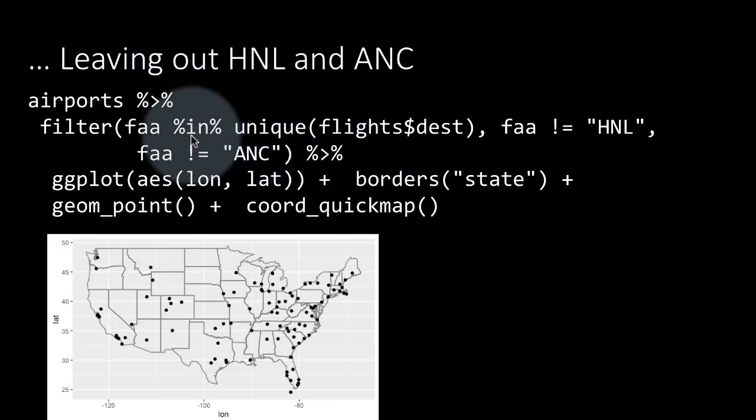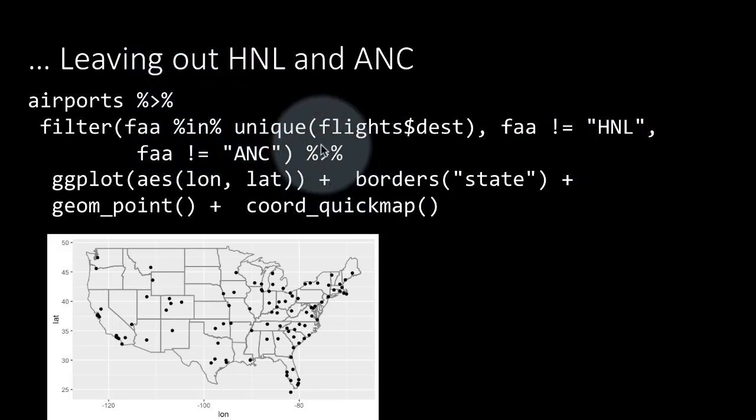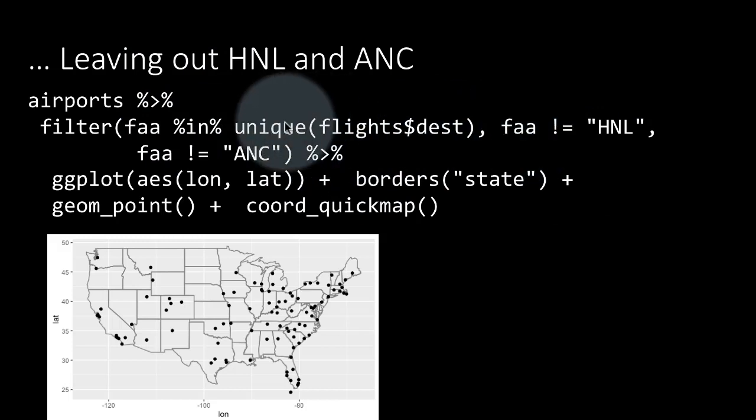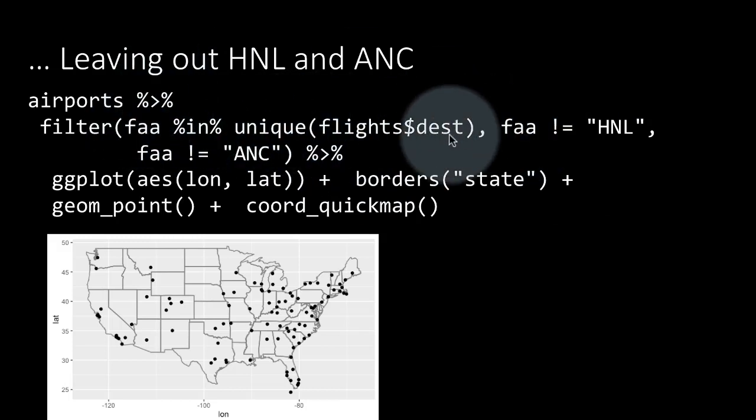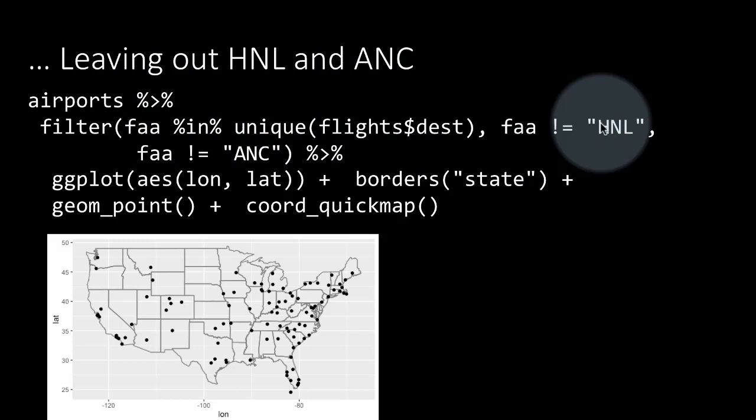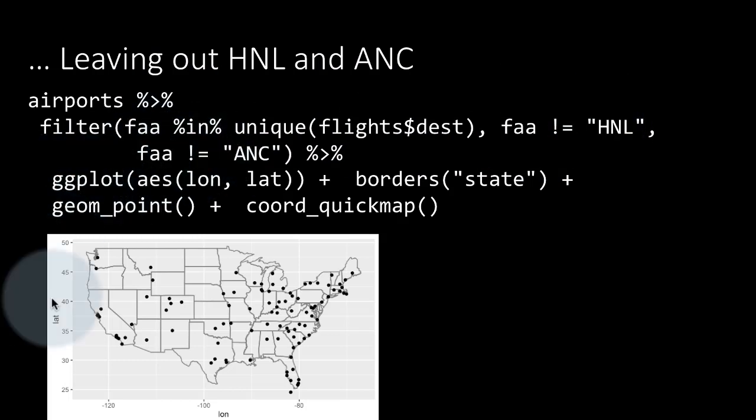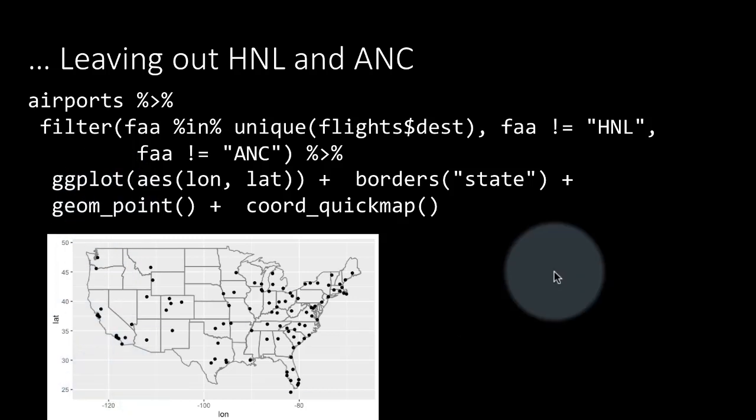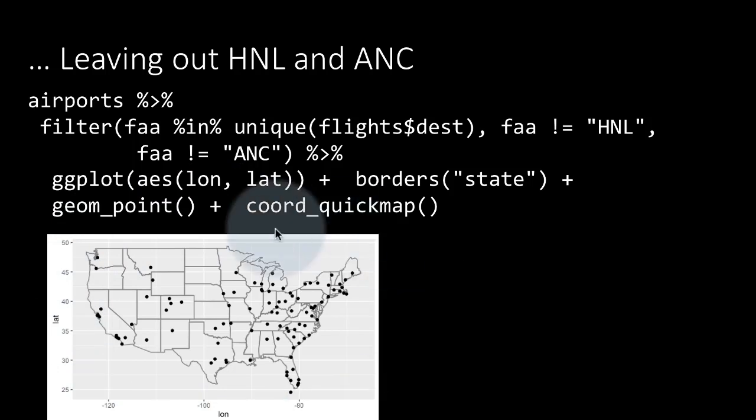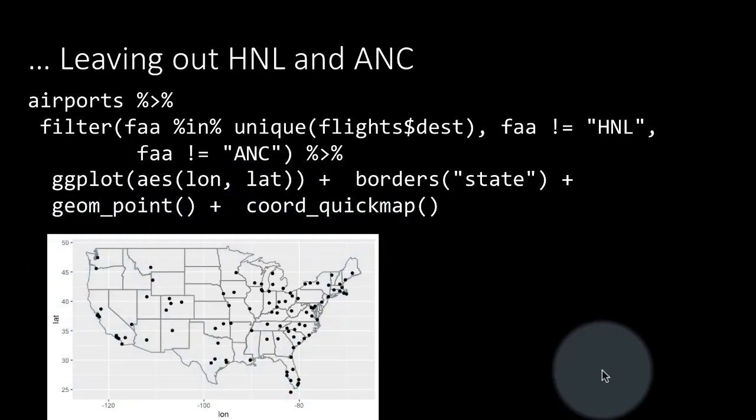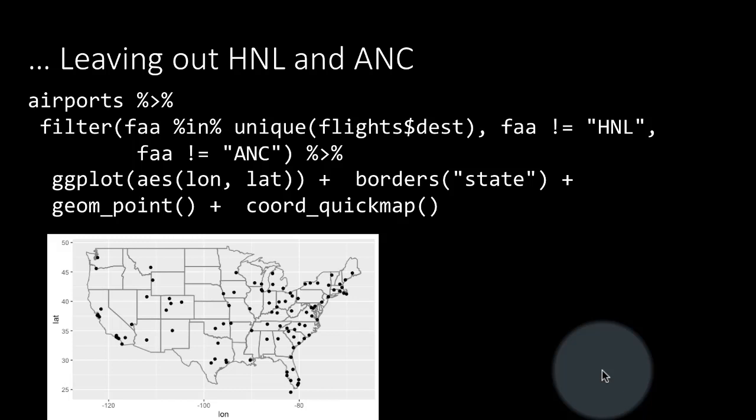You retain only those rows which satisfy all these three conditions. That is, the airport code belongs to the destinations and it's not equal to Honolulu, not equals Anchorage. So then we leave out the airport codes for those two distant things, Anchorage and Honolulu. And then we plot it and we get only the airports in the mainland USA. So again, what I wanted to do with this is to show you some examples of plotting with maps as well.